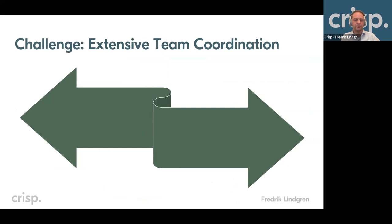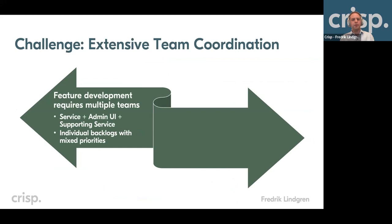So what's the challenge in this case? It's a fairly common but messy picture. For feature development, these three teams have separate backlogs with separate prioritization. There's an overhead of program management and meetings to make sure things are done in a way so that some kind of value can be delivered within at least a few months.